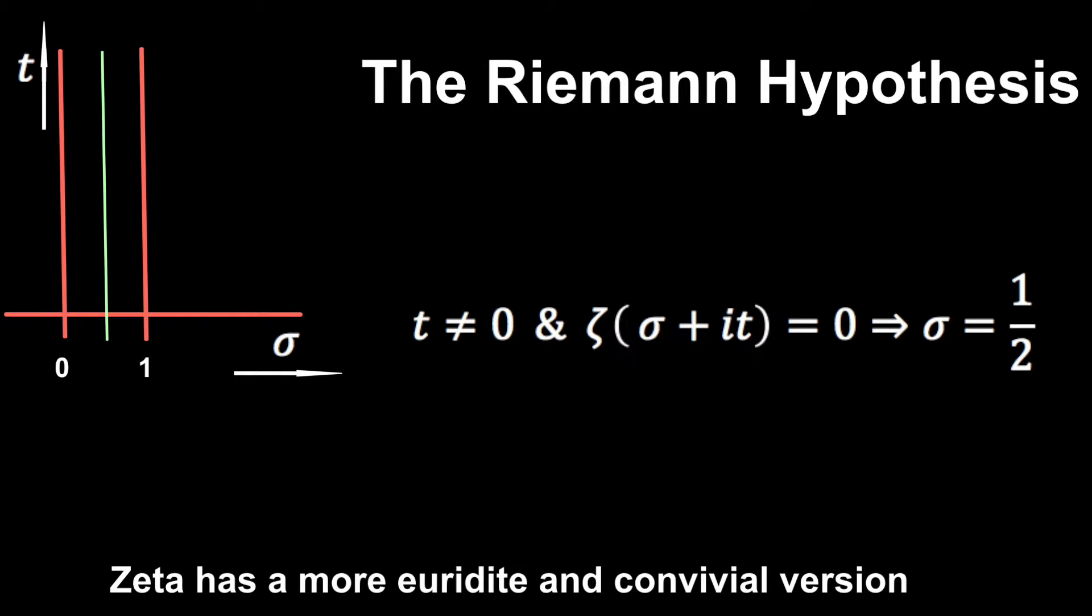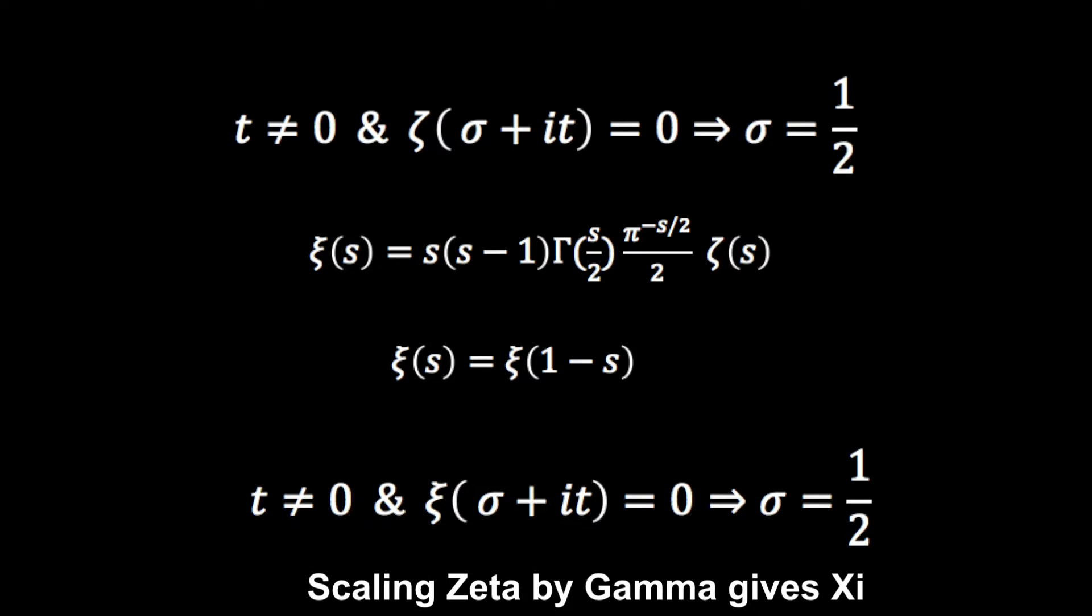How did Riemann have the vision to see this? What was he looking at? Well the answer is Xi. Let's have a look.